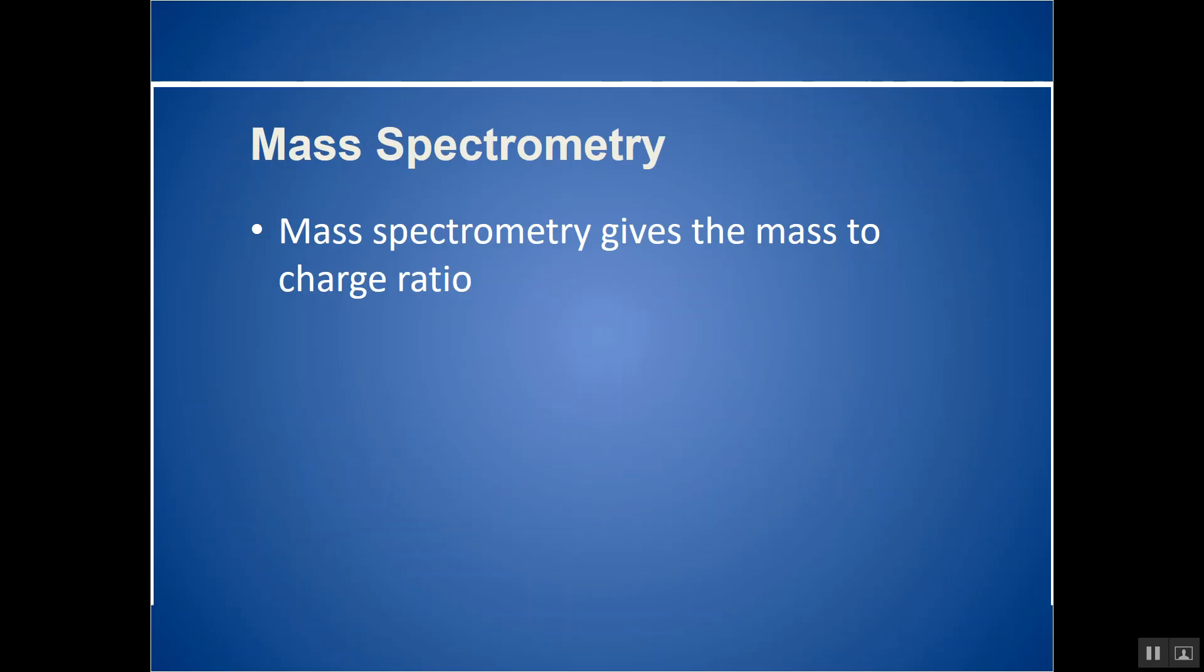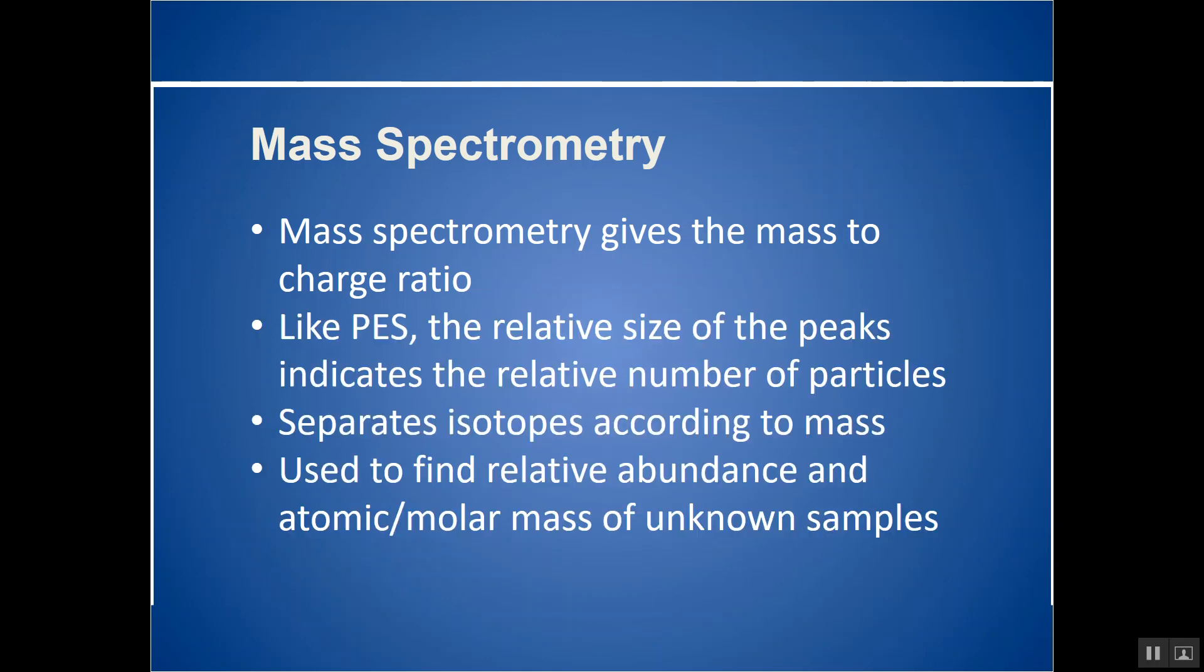Look at mass spectrometry or mass spec. Mass spec is going to give the mass to charge ratio in a sample. It's typically used for figuring out how many isotopes there are or the atomic mass of a sample, different things like that. It separates isotopes according to mass.